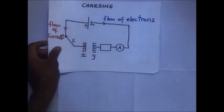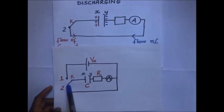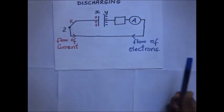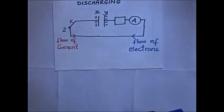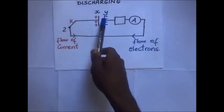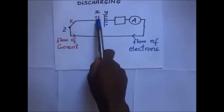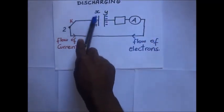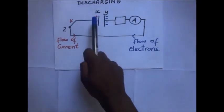Now let's explain the discharging process. We connect switch K to terminal two instead of terminal one. When switch K is connected to terminal two, there is no source of EMF in this part of the circuit — only the two charged plates connected to a resistor. Electrons flow from plate Y to discharge plate X. The potential difference across the capacitor is initially very high, but as electrons flow from plate Y to neutralize plate X, the PD decreases.